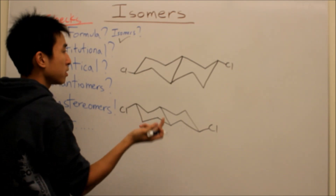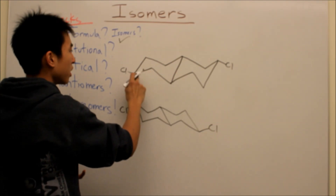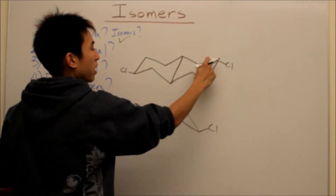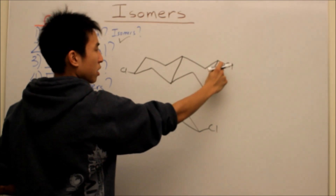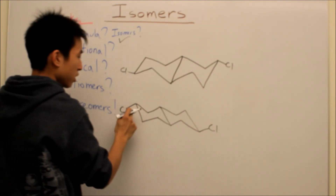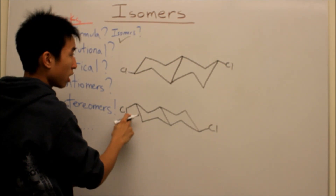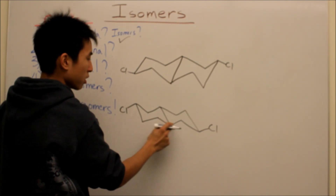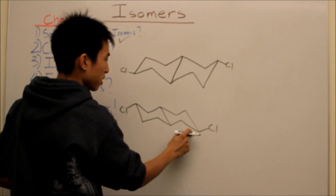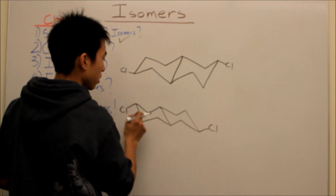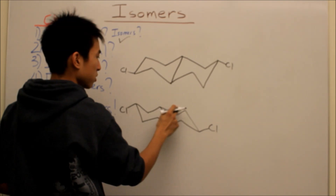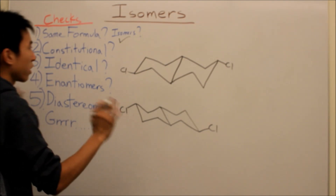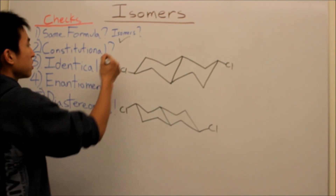If you count the bond distance: one bond, two bonds, three bonds, four bonds, five bonds — you have chlorine. And from the other side: one bond, two bonds, three bonds, four bonds, five bonds — you have chlorine there. And again: one, two, three, four, five bonds — chlorine. So their constitution is the same.